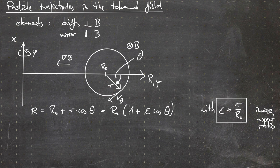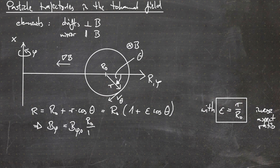This is the inverse aspect ratio we discussed when talking about magnetic configurations. With this coordinate system, we can write down equations for B_phi: the total magnetic field component B_phi equals B_phi naught times R naught over R. Using a Taylor expansion and truncating after the first term, we get B_phi naught times one minus epsilon cosine of theta.